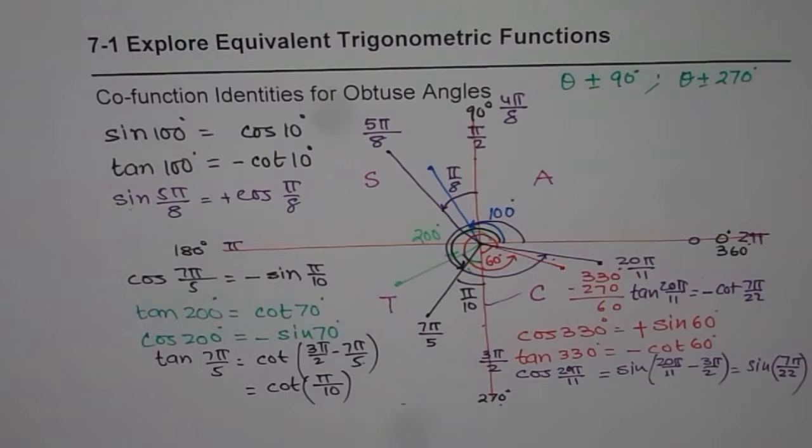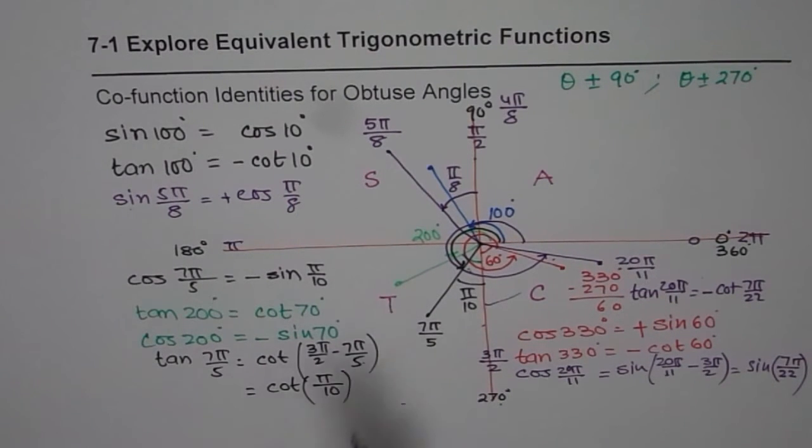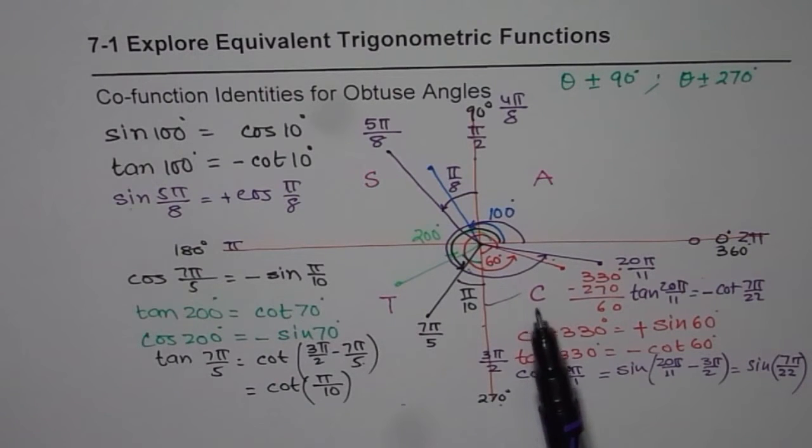So whenever we are working with co-function identities, take care of the sign, right? All are positive. Sine is positive. Tan is positive. Cos is positive. In quadrant 1, 2, 3 and 4, respectively.